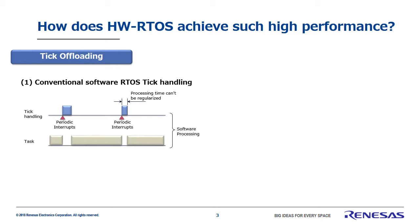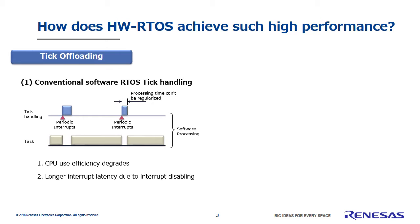A tick is the internal RTOS processing for measuring time. The tick activation interrupt occurs periodically, which activates the tick process. This results in applications being interrupted at fixed periods and therefore a drop in CPU use efficiency — this is a serious issue. In addition, the tick process is a critical one, so it is run with interrupts disabled. In other words, any interrupts that occur during the tick process must wait, which causes longer interrupt latency.